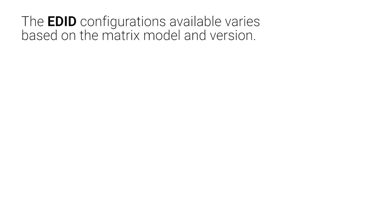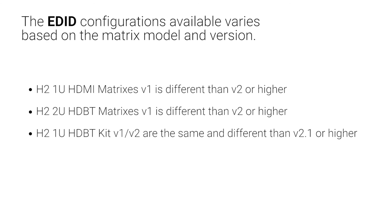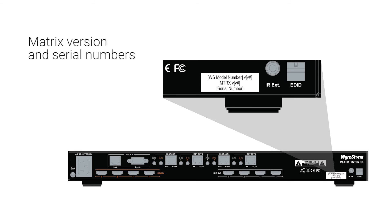Do note that there are three different versions of EDID dip switch settings: Version 1, 2, and 2.1. Matrix version numbers are printed with the serial number and are located on the bottom of the matrix or the back right corner.